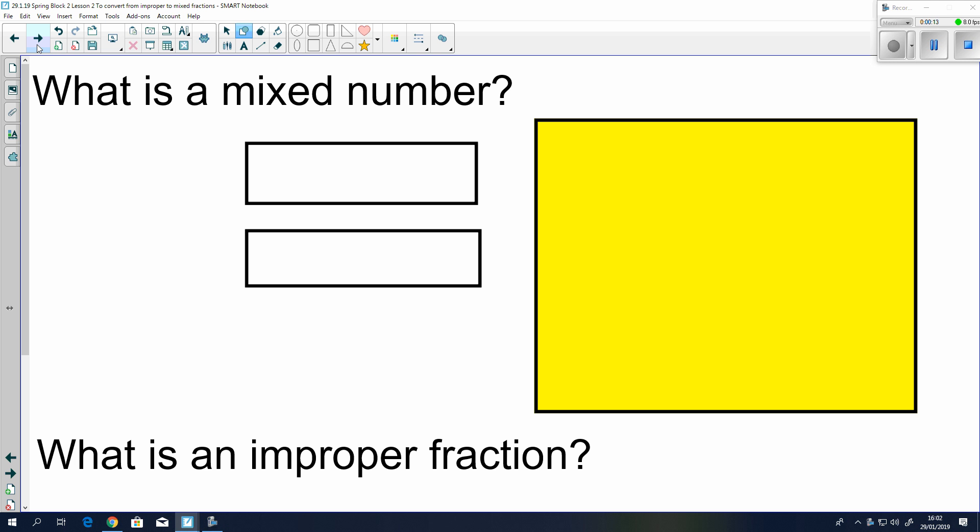So, what is a mixed number? Well, let's have a look. There are two essential ways you can write fractions. One is a mixed number like 1 and 2 thirds. The mixed number refers to a whole number here and a fraction here. That's a mixed number.